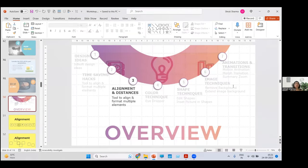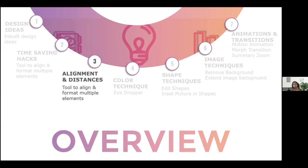Now I'll begin with the tools. The first tool is alignment and distancing. A lot of people ask what they can do to make a presentation look better. Two things: one, definitely add visuals — that always helps. Two, when you have so much content that you don't have space for visuals, always make sure everything is properly aligned. Alignment and distance is the key to a clean presentation.